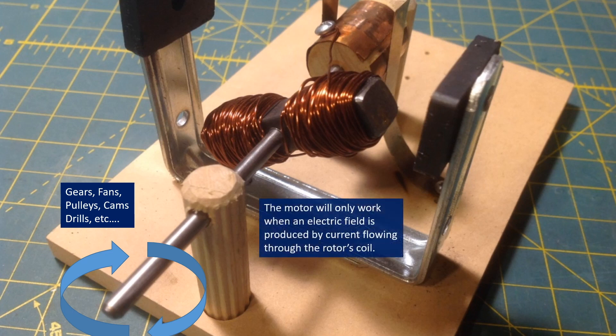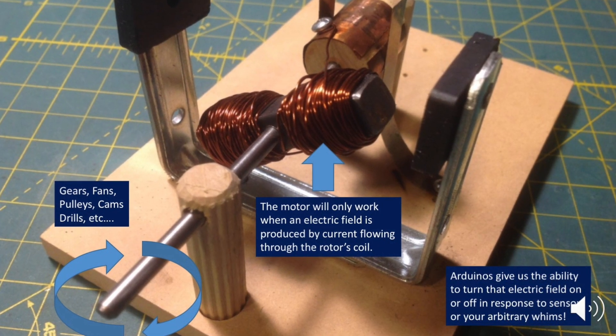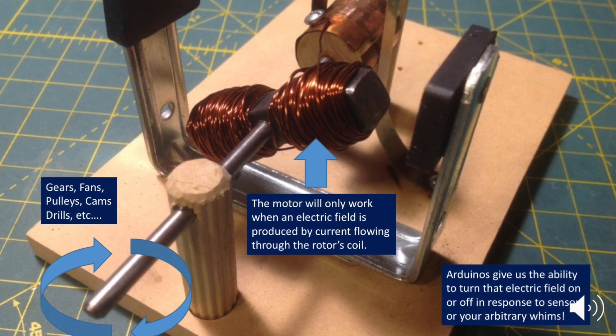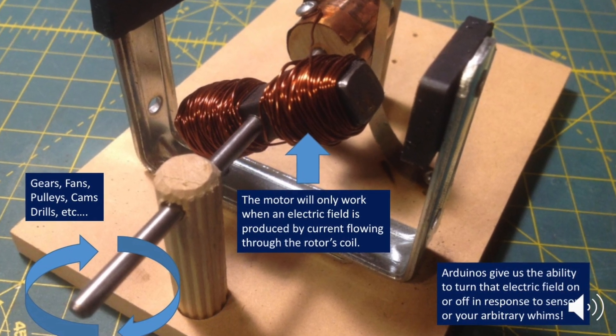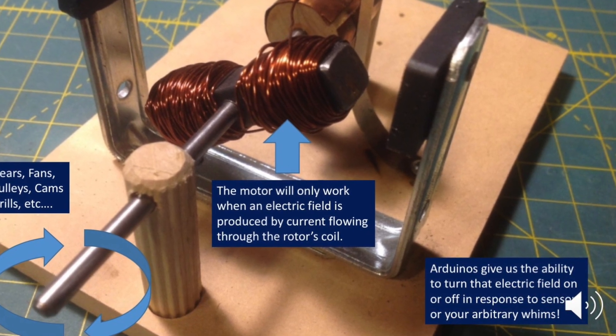When we want to turn this off, we simply shut down the motor by turning off the flow of current flowing through the rotor, and this is where our Arduinos give us yet another opportunity to do something truly extraordinary. Our Arduinos give us the ability to turn that electric field on or off in response to sensors or other inputs we define, all at our arbitrary whims.